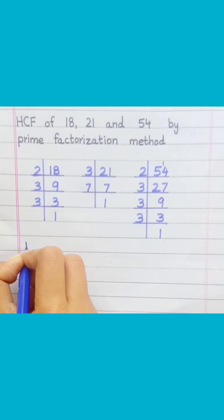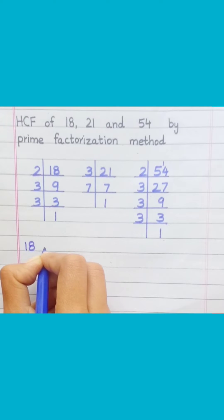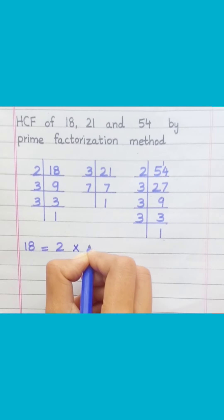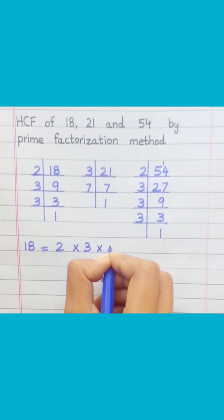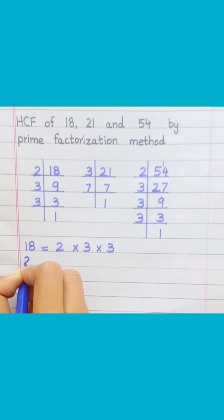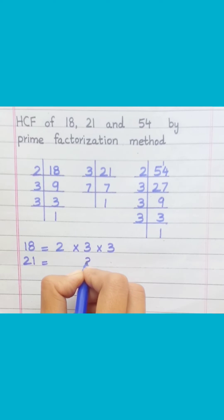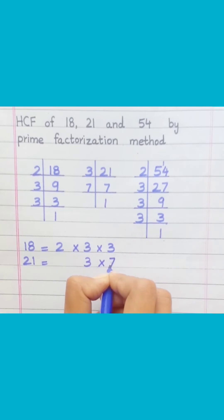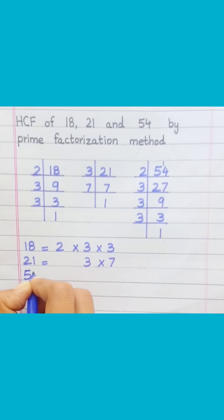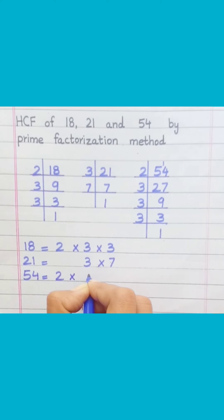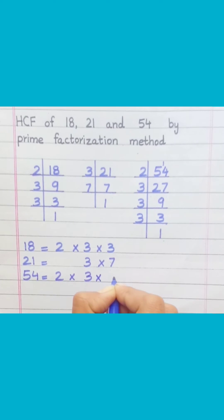18 equals 3 × 3. 21 equals 3 × 7. 54 equals 3² × 3 × 3.